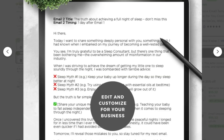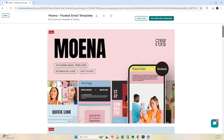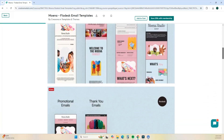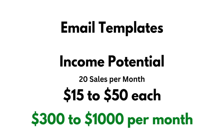The next digital product idea is email templates, and there are several different types that fall under this category. If you are great at creating email drafts or email copy, creating email sequences, or designing email newsletters for platforms like Klaviyo, Mailchimp, Flodesk, or Kit — also known as ConvertKit — these can sell anywhere between $15 to about $50 per template, giving you a monthly income between $300 to $1,000 per month.